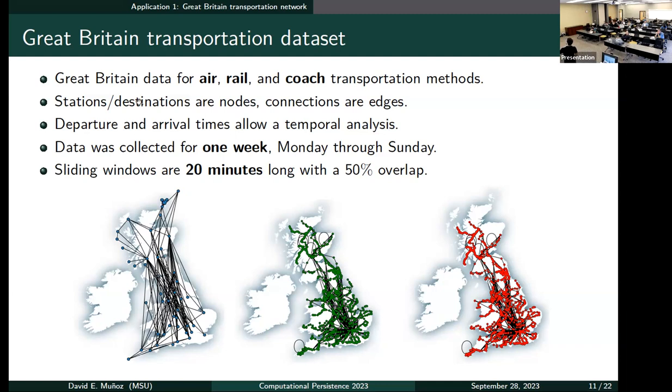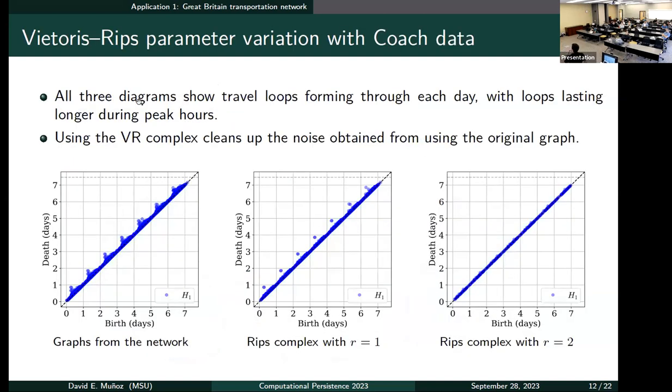This data set was taken from one week, Monday through Sunday. For our analysis, we will use windows or intervals of 20 minutes with an overlap of 50 percent, so the adjacent intervals will always be overlapped. These 20 minutes length was chosen from the average waiting time of these transportation methods, which was about seven minutes, to have some connectivity between adjacent intervals.